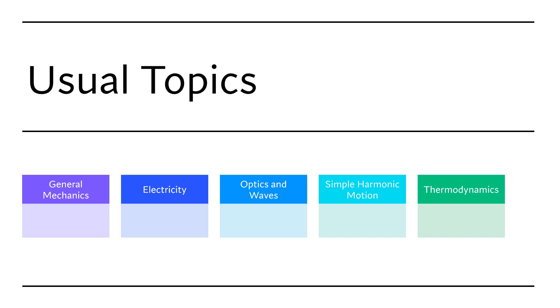A quick survey of the past papers reveals that the physics questionnaire actually covers a very wide range of topics. And here I summarize what I think are the most prominent topics you will see on the questionnaires. So those fall under general mechanics, electricity, optics and waves, simple harmonic motion and thermodynamics.